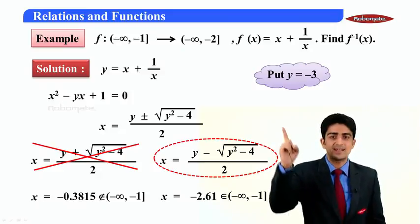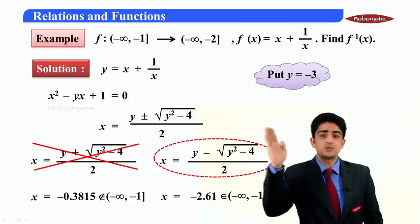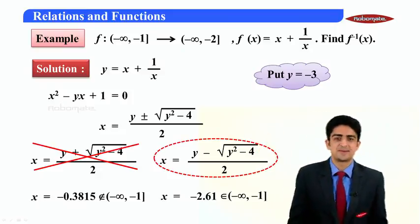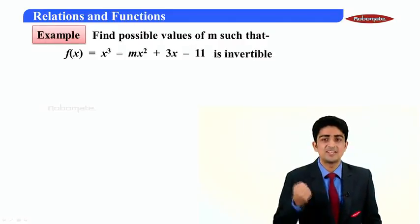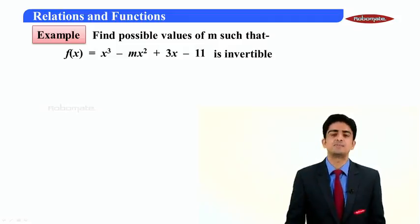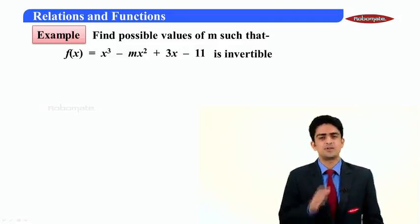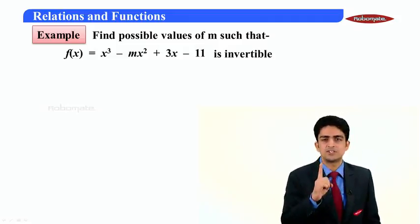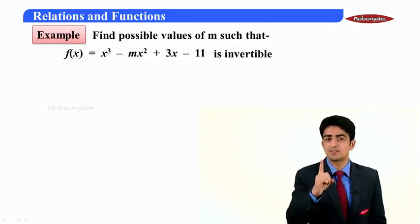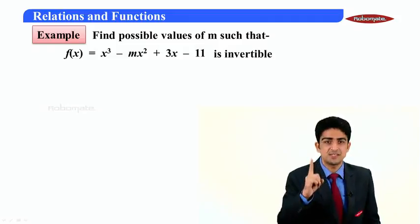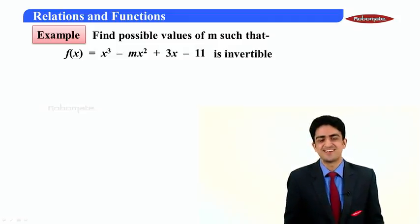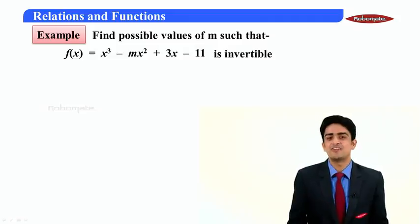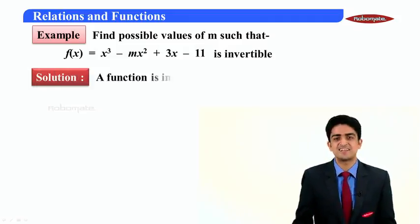Moving ahead we have this example. We got to find m for which this function becomes invertible. Now don't get confused, simple condition, keep it in mind, very important: a function is invertible if and only if it is bijective. So we need to know for which values of m this is bijective.